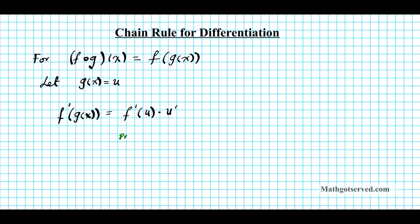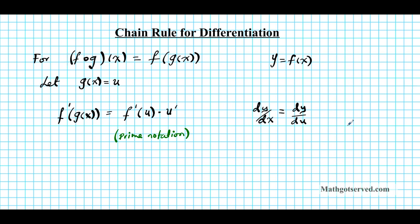This is known as the prime notation. Now let's go ahead and use the Leibniz notation. Using the same idea, let's say that y is f of x. So since y is a composite function f of g of x, which I can write as f of u.